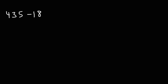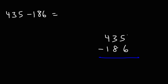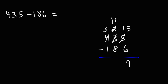Let's move on to the next example: 435 minus 186. 5 minus 6 is a negative number, so we can't do that. We're going to borrow a 1 from 3. This becomes a 2, and we put the 1 next to the 5, making it 15. Now 15 minus 6 is 9. 2 minus 8 will give us a negative number, so we borrow a 1 from 4. 4 minus 1 is 3, and 12 minus 8 is 4. Then 3 minus 1 is 2. So the answer is 249.